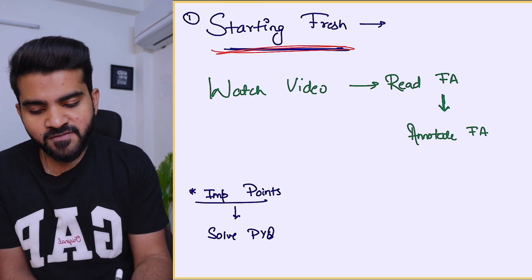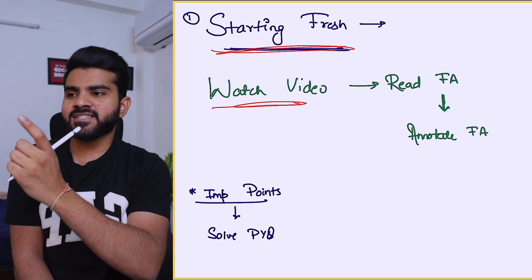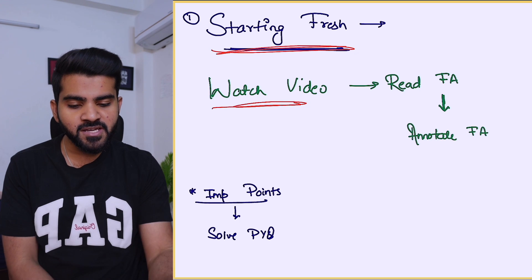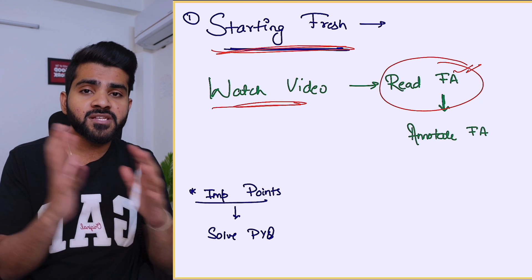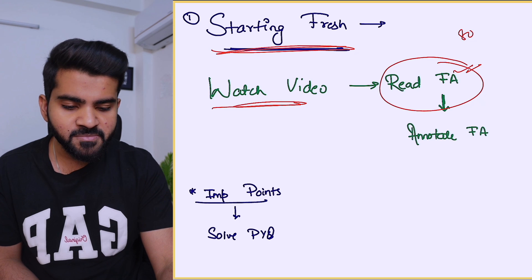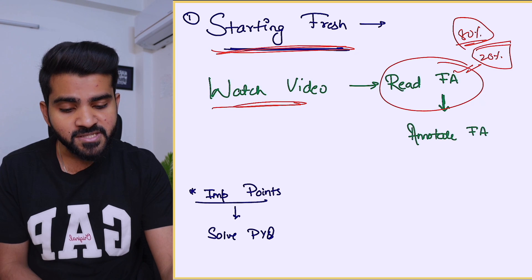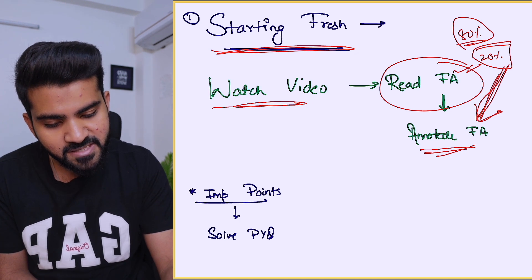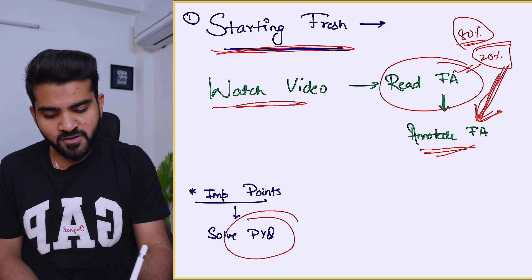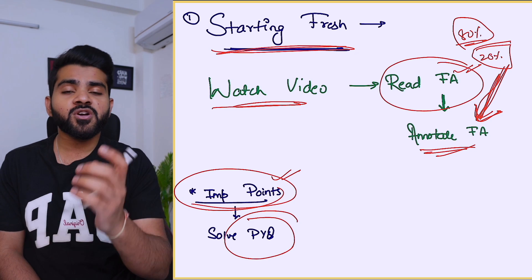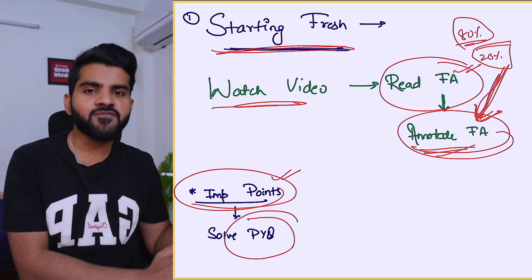Coming to the first scenario — if you are starting fresh — the first thing to do is watch the video for whatever resource you are using. Then, after watching a complete video, say on Cushing syndrome, read the same topic in First Aid. See what things are written there and what things are missing. Around 80% of things will already be in First Aid; the remaining 20% you have to annotate. By solving PYQs, you get to know which points and topics are important, and those missing important points you have to write into First Aid.